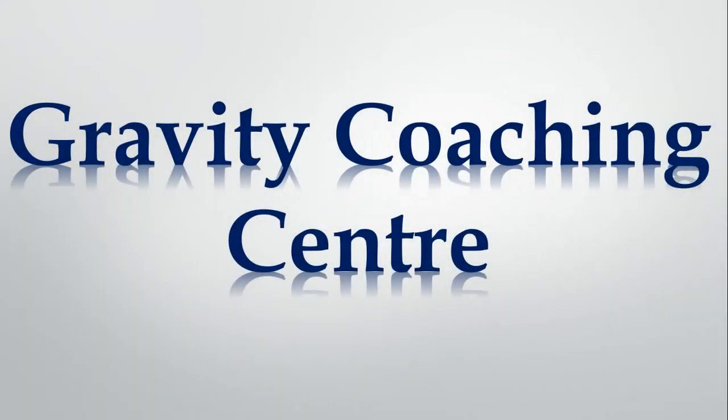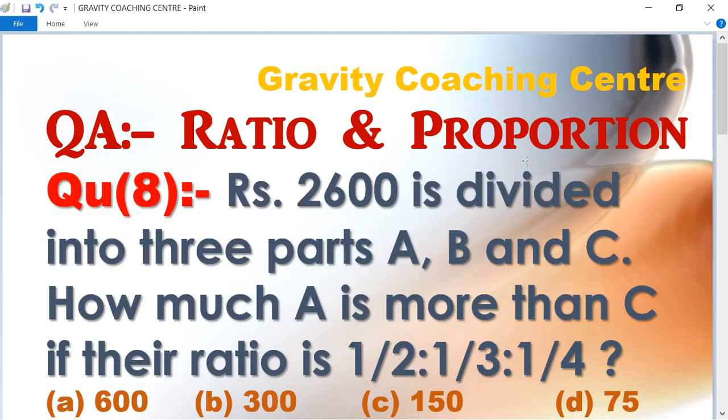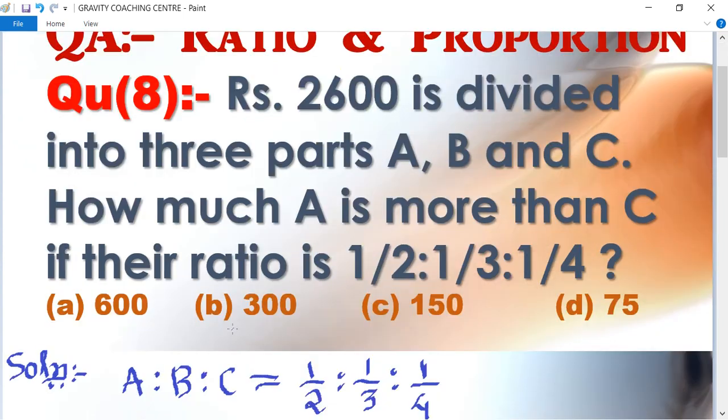Welcome to our channel Gravity Coaching Center. Quantitative Aptitude chapter: Ratio and Proportion. Question number 8: Rs. 2600 is divided into three parts A, B and C. How much A is more than C if their ratio is 1/2:1/3:1/4?